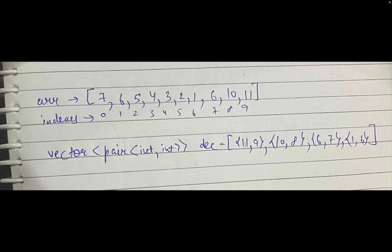Then 10 comes. We check whether 10 is smaller than the last element — yes, 10 is smaller — so we store 10 and its index. Similarly for 6: 6 is smaller than 10, so 6 and index 7 are inserted. Then 1: 1 is smaller than 6, so 1 and index 6 are inserted. Then 2: 2 is not smaller than 1, so nothing more is added. All remaining elements are greater than 1. This array will be sorted in decreasing order.